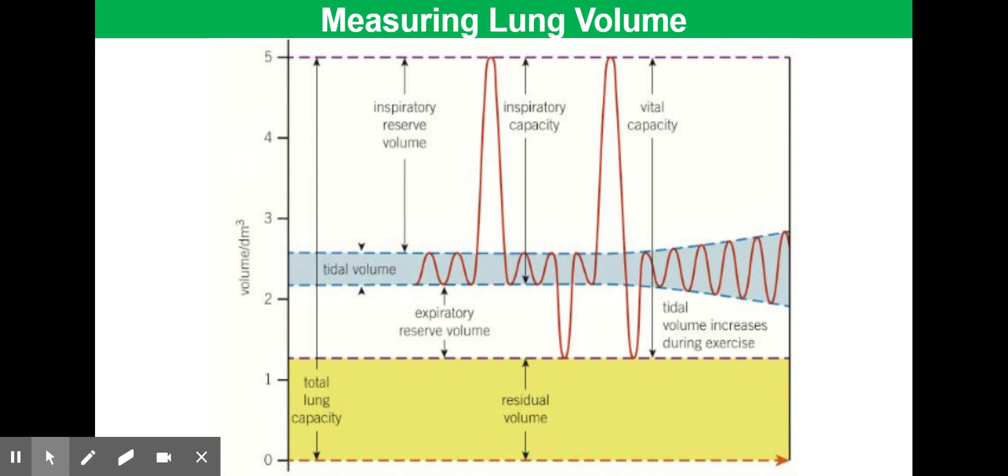The residual volume, which on the spirometer trace is shown in that yellow band at the bottom, is the volume of air that remains in the lungs even after forced expiration. There is always air remaining in the airways and in the alveoli, and that tends to be approximately 1.5 decimetre cubed, although it's shown to be a little bit lower than that on the spirometer trace on that slide.